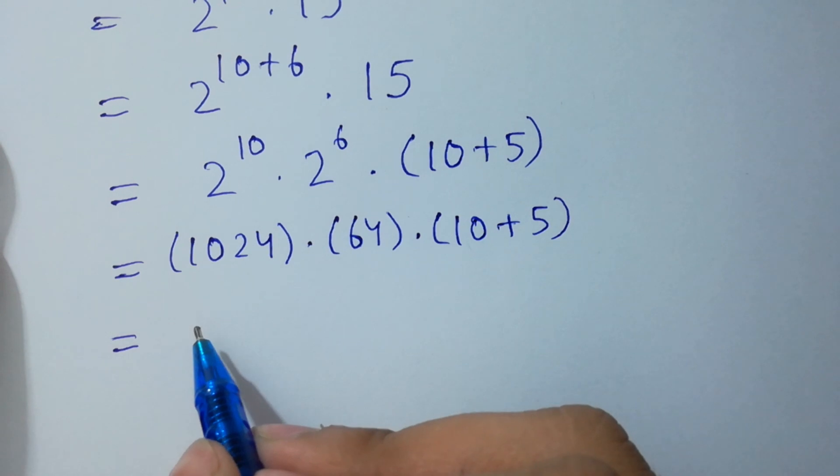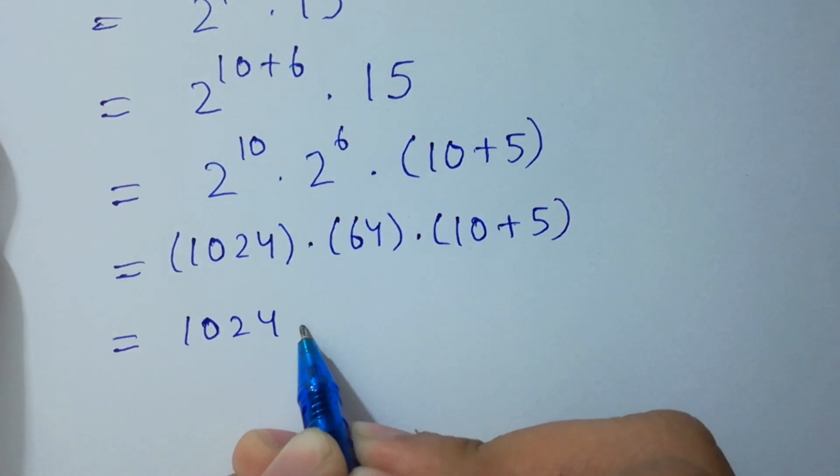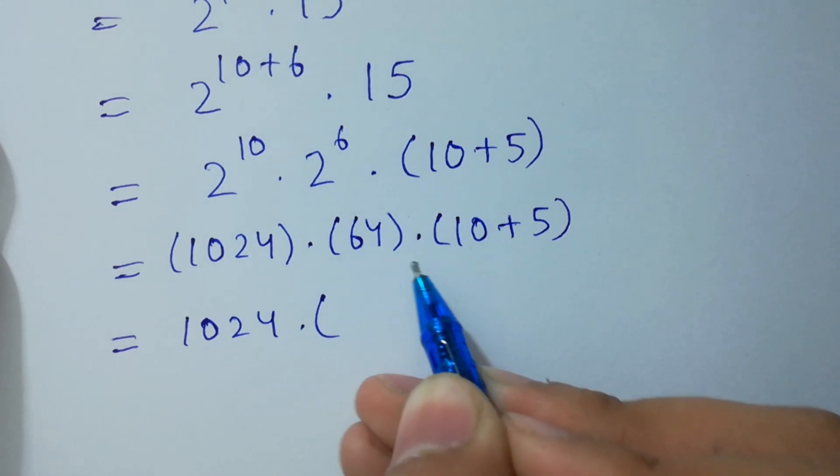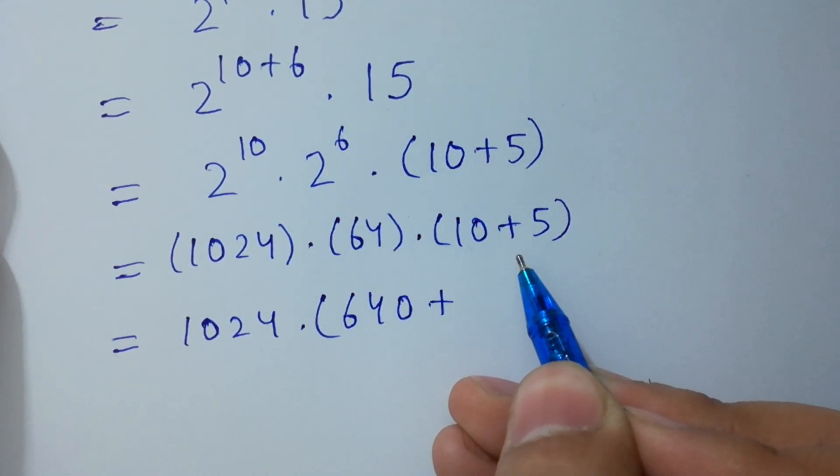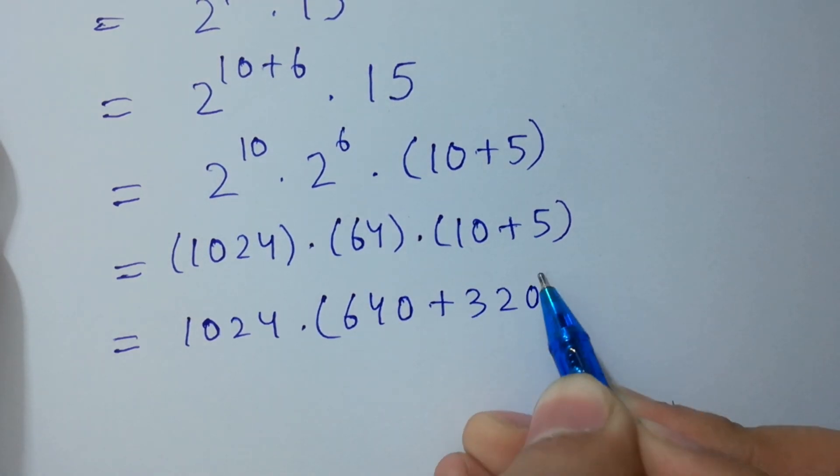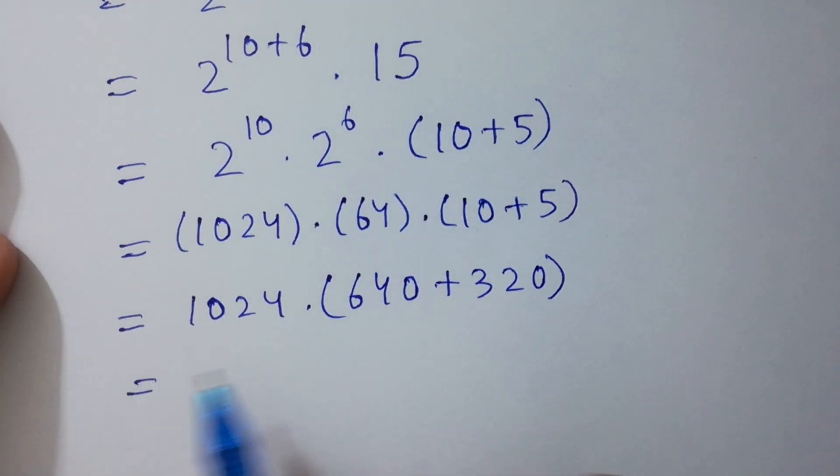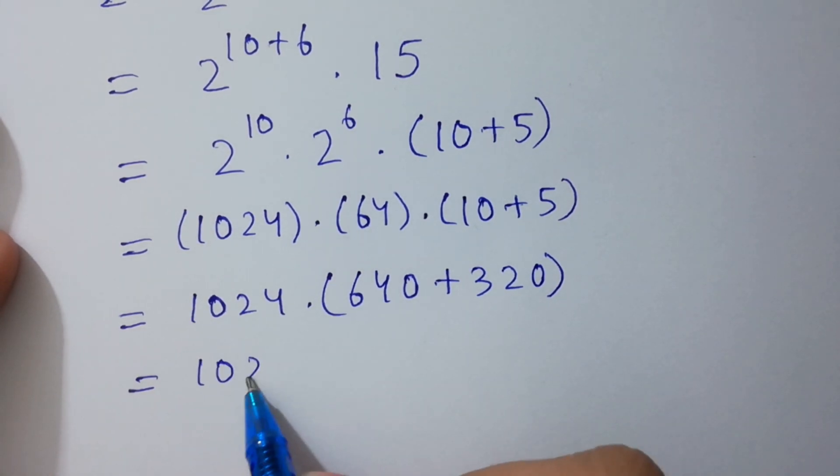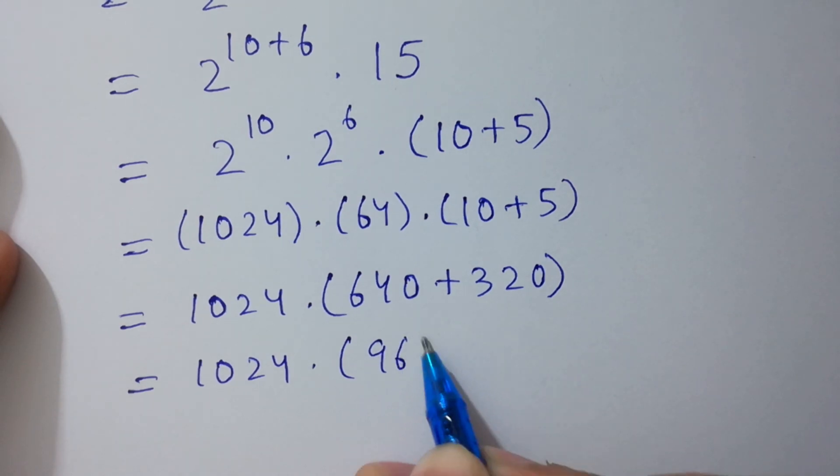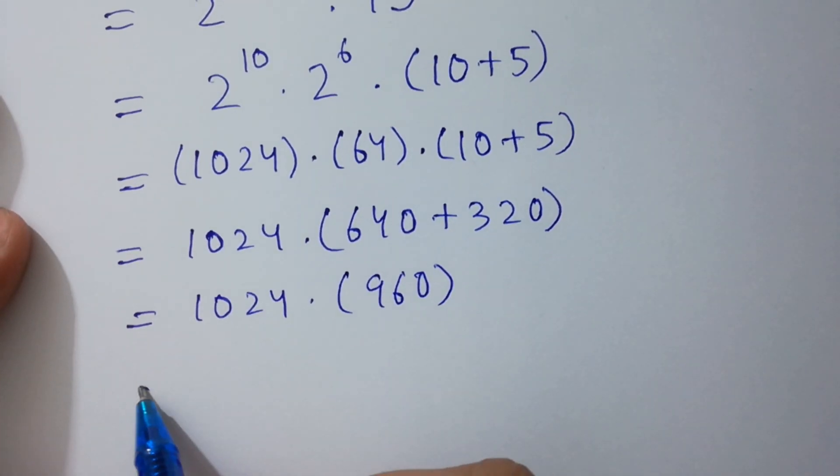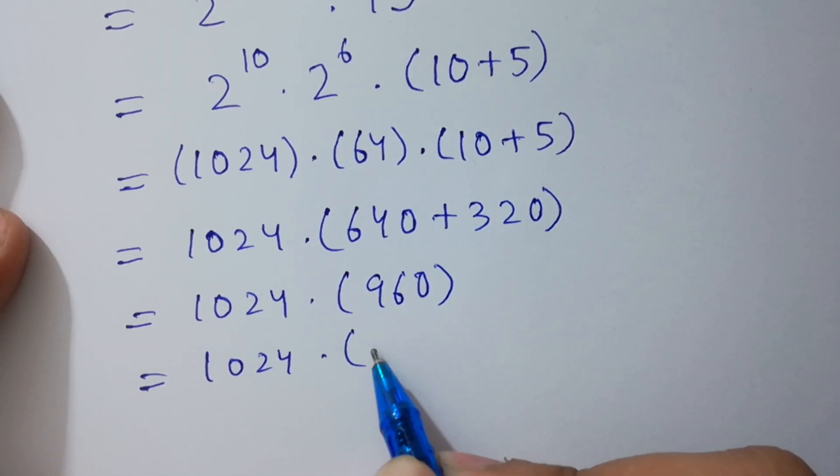Next step: 2^10 = 1024 and 2^6 = 64. So 64 times 10 gives 640, plus 64 times 5 gives 320. Next step: 1024 times (640 + 320 = 960).